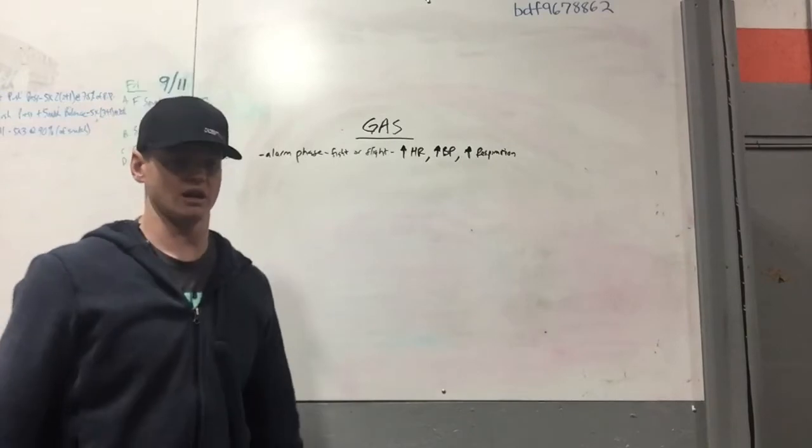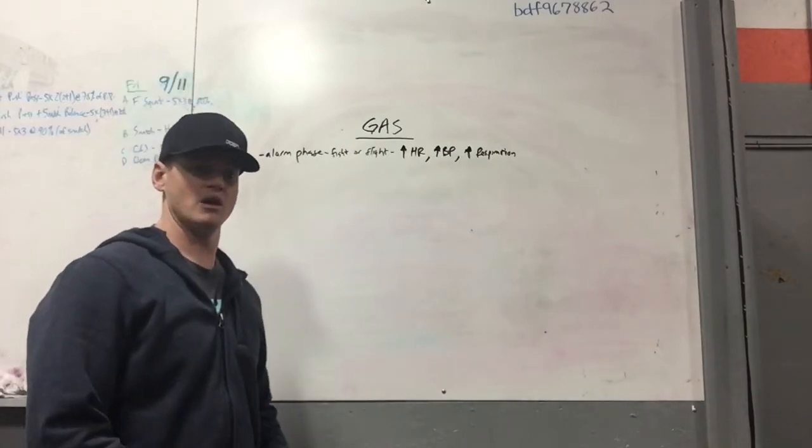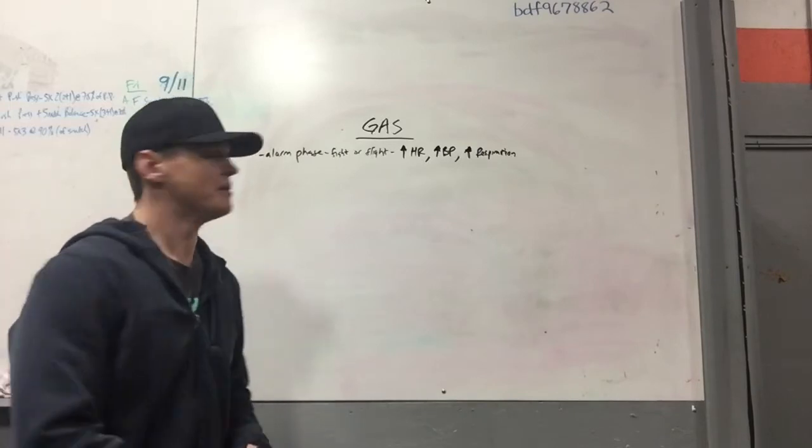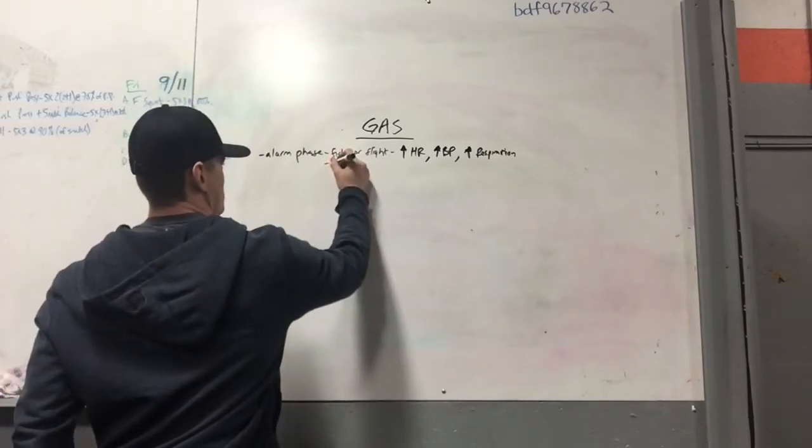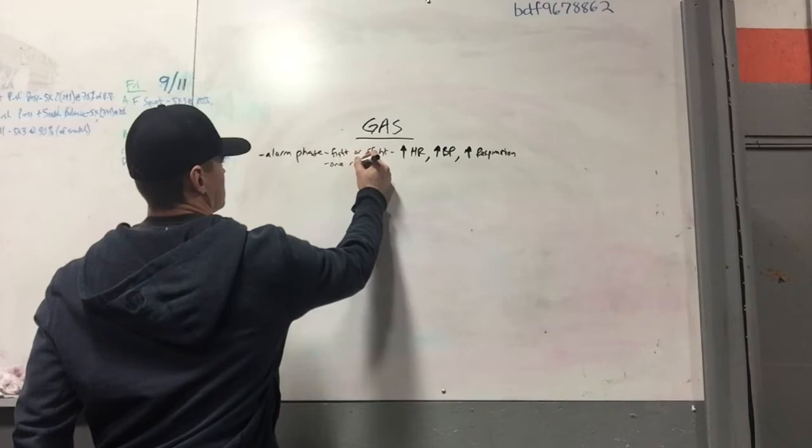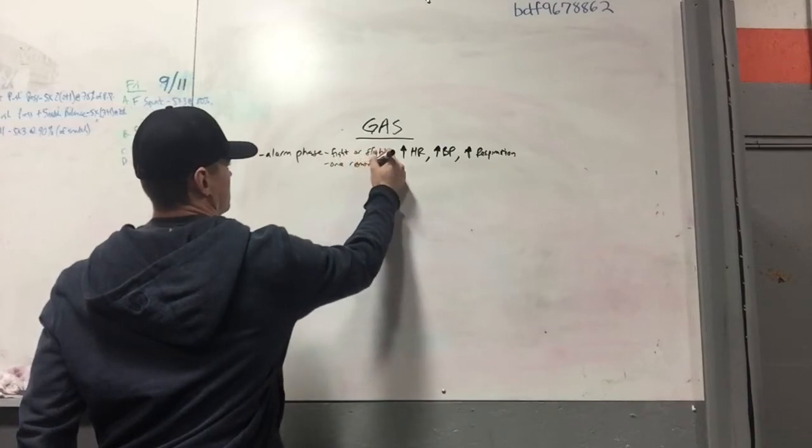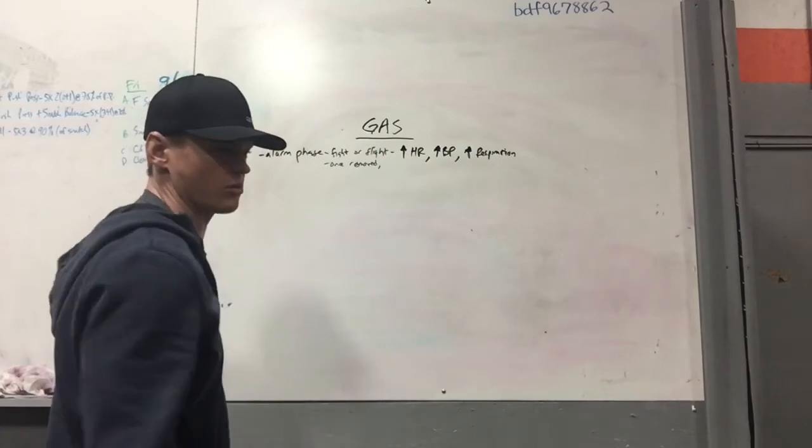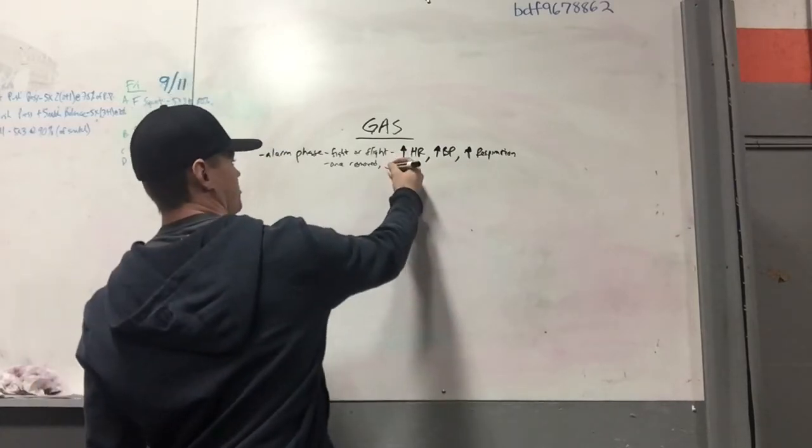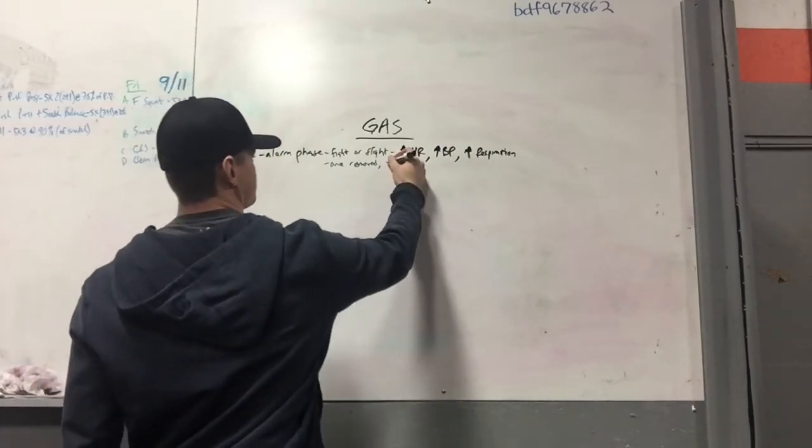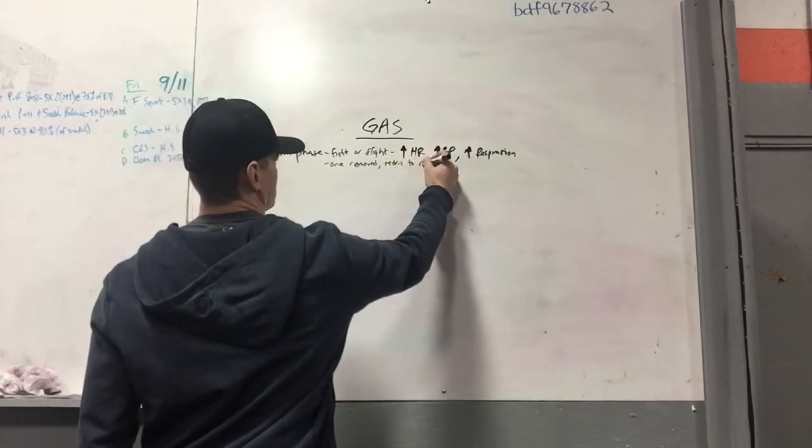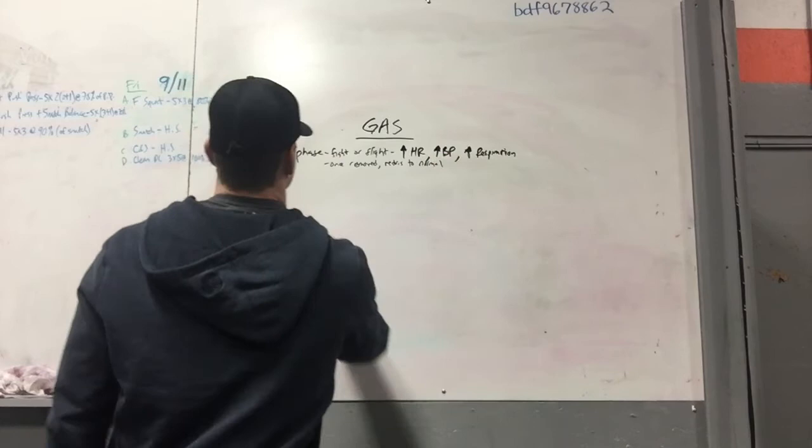This relates a lot to what we're doing as well. In a workout, three, two, one, go—all these things start to happen so you can deal with that initial stress. Once this is removed, you go back to homeostasis—normal blood pressure, normal heart rate, normal breathing, everything returns to normal.